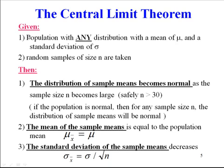The central limit theorem basically says: given any population with any distribution, with a mean of mu and a standard deviation of sigma, if we take random samples of size n, then one — the distribution of sample means becomes normal as the sample size becomes large. Two — the mean of the sample means equals the population mean, so mu sub x-bar equals mu. And three — the standard deviation of sample means is sigma divided by the square root of n, which is what we just saw.